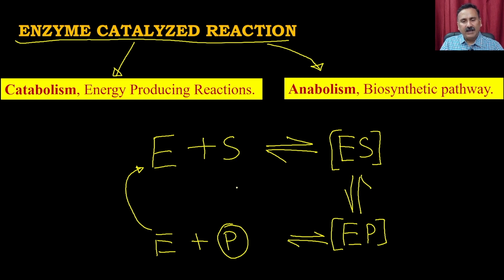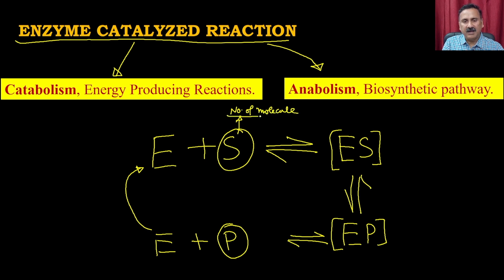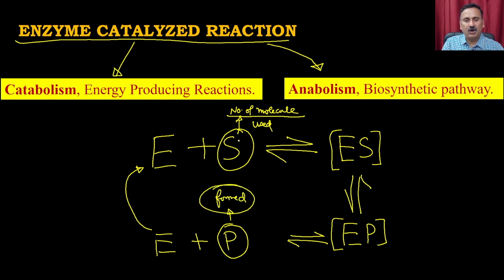How can we measure enzyme activity? The ability of an enzyme to process the number of substrate molecules is a direct measurement of activity. If you want to measure enzyme activity, you have two options: either count how many substrate molecules are being used, or how many product molecules are being formed. So you can measure either the formation of product or the depletion of substrate to determine enzyme activity.